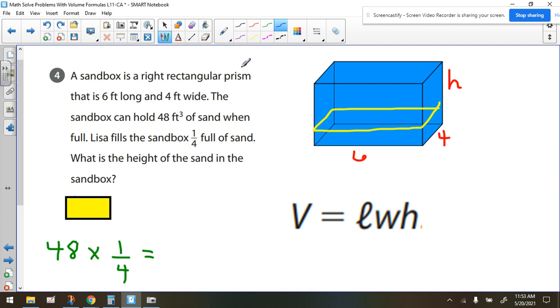A sandbox is a right rectangular prism that is six feet long and four feet wide. The sandbox can hold 48 cubic feet of sand when full. Lisa fills the sandbox one-fourth full of sand. What is the height of the sand in the sandbox?